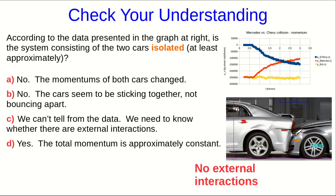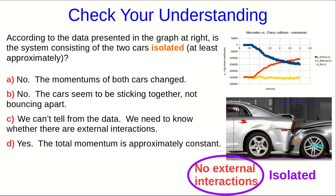Remember that the definition of isolated is that there are no external interactions. Notice that choices A and B have nothing whatsoever to do with whether there are external interactions, and so they must not have anything to do with whether the system is isolated, and so that can't be right.